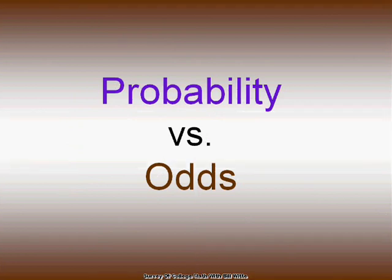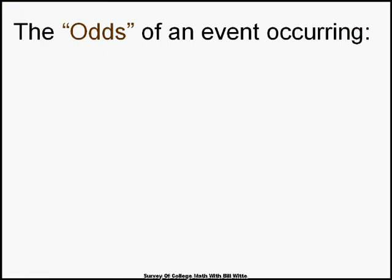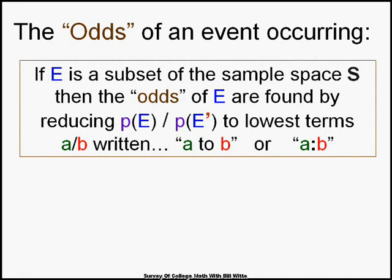Now, odds — here's the new stuff. What's the difference between probability and odds? They are not the same thing. The odds of an event E are defined as: if E is a subset of sample space S, the odds of E are found by reducing the fraction P(E) over P(E'), where E prime is the probability of E not happening. Odds are written as A to B or A:B. The odds against E are the reciprocal: P(E') over P(E), reduced to lowest terms.